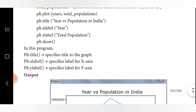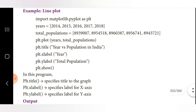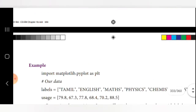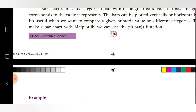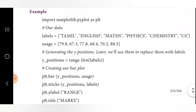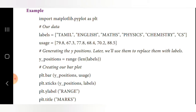To draw a line chart we use plt.plot; to draw a bar chart we use plt.bar. Here is the example code: import matplotlib.pyplot as plt. Labels are defined as the categorical data: Tamil, English, Maths, Physics, Chemistry, CS. Usage values are: 79.8, 67.3, 77.8, 68.4, 70.2, 88.5.